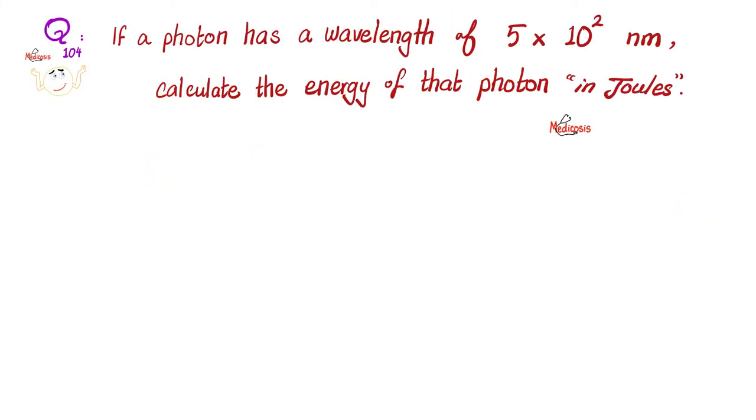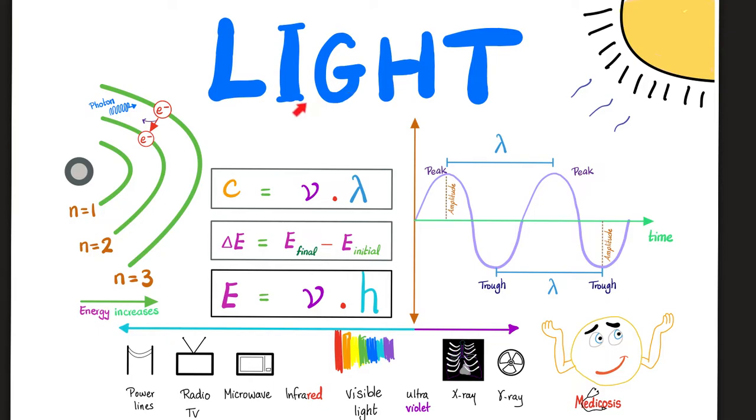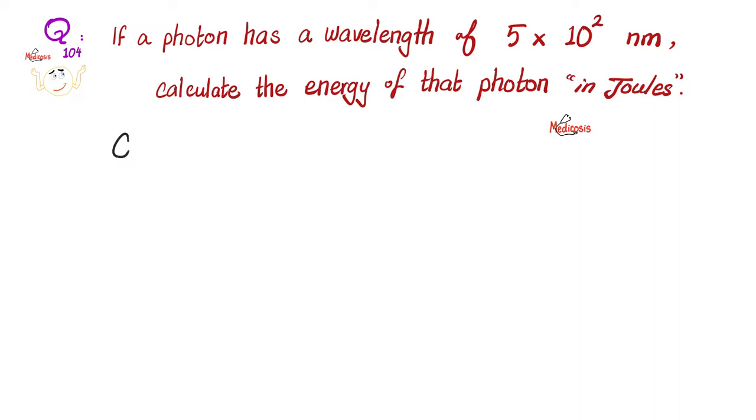Let's answer the question of the previous video. If a photon has a wavelength of 5 times 10 raised to the second power nanometers, calculate the energy of that stinking photon in joules. Please pause, get a pen and paper, and try to solve this yourself. Are you ready? Let's do it. We will use two light equations to solve this problem. We'll use speed equals frequency times wavelength and we'll use energy equals wavelength times Planck's constant. So let's give it a whirl.